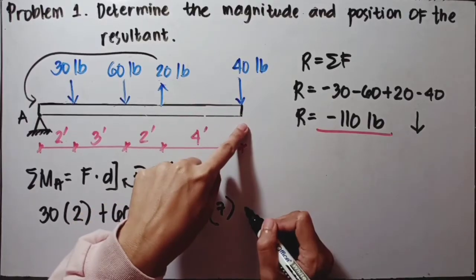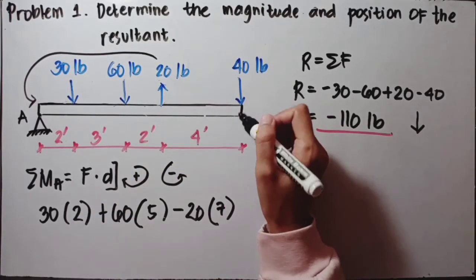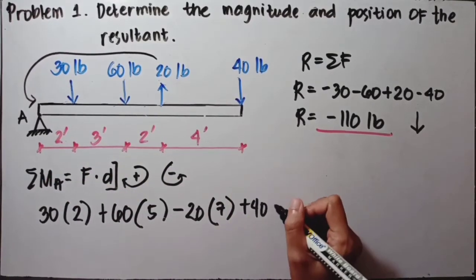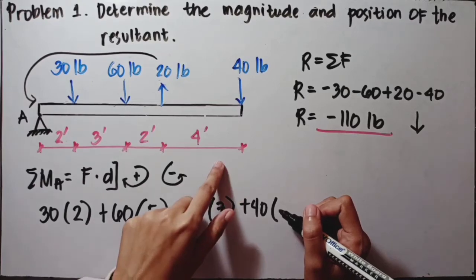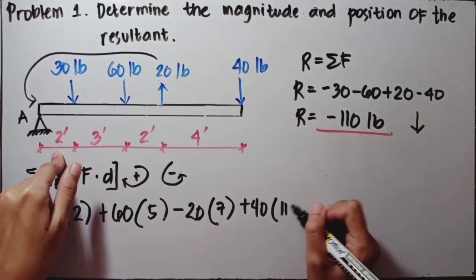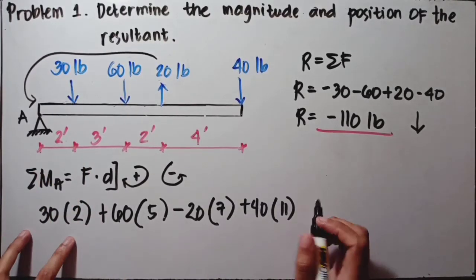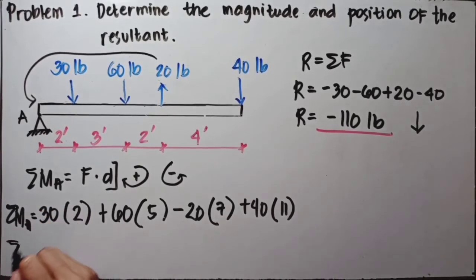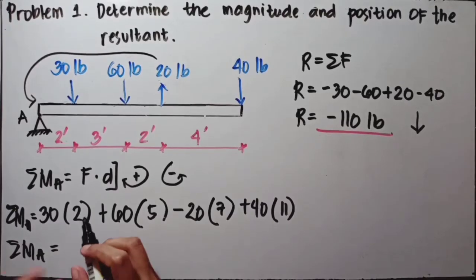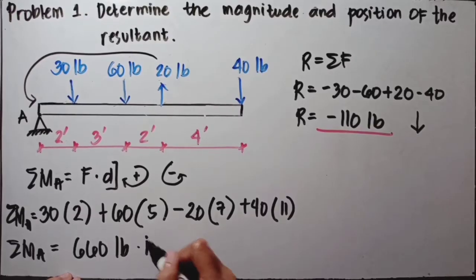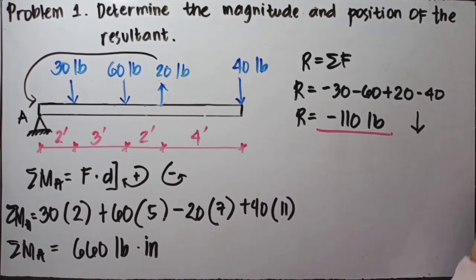For the 40-pound force, it is positive because its rotation is clockwise — same as the 30 and 60. So positive 40 times its moment arm, which is 4 plus 2 plus 3 plus 2, equaling 11 inches. Adding all of these together, the summation of moments at A equals 660 pound-inches. That is our resulting moment.